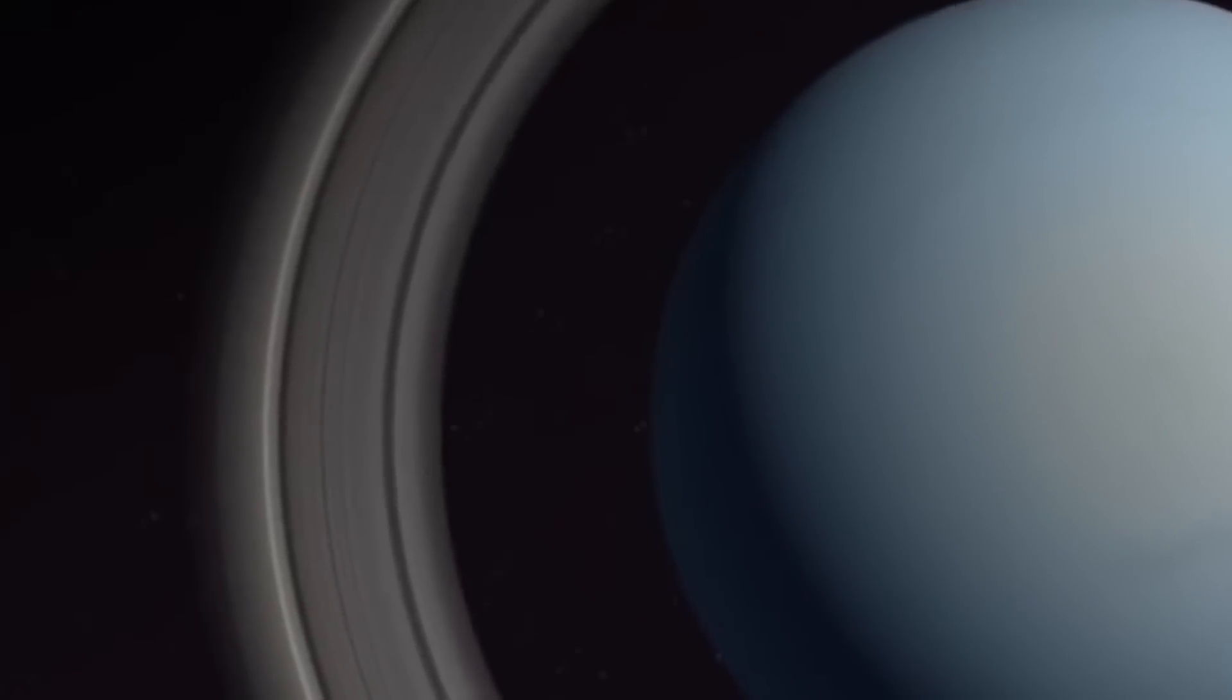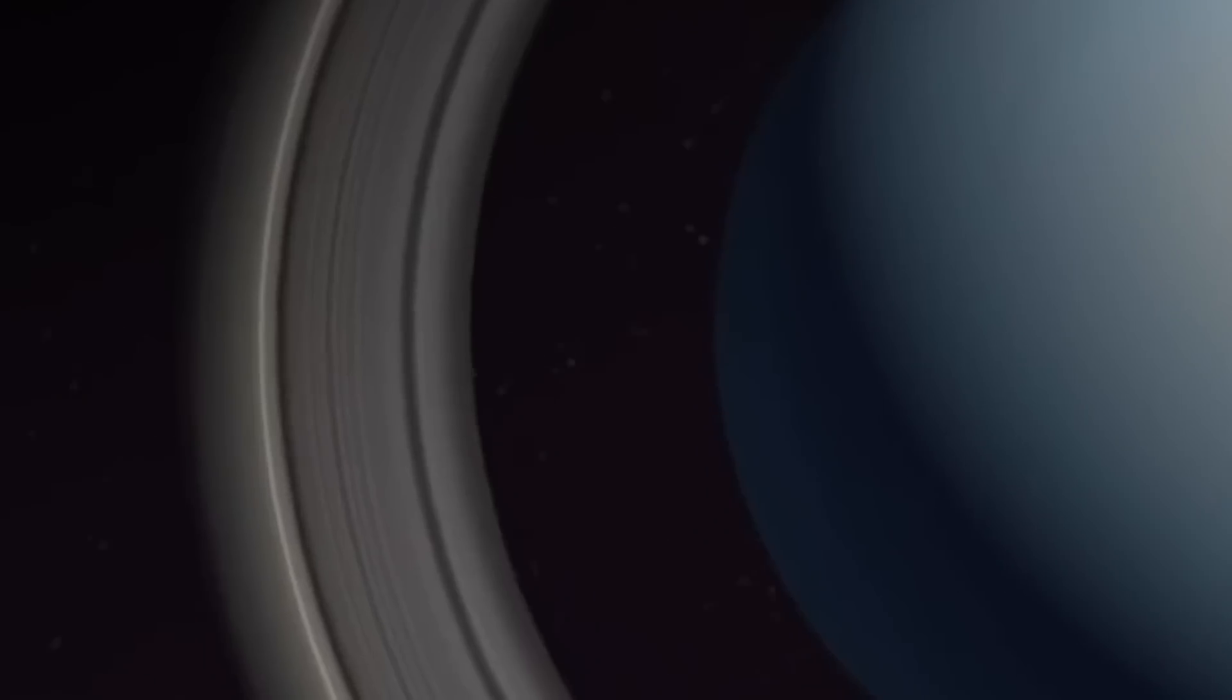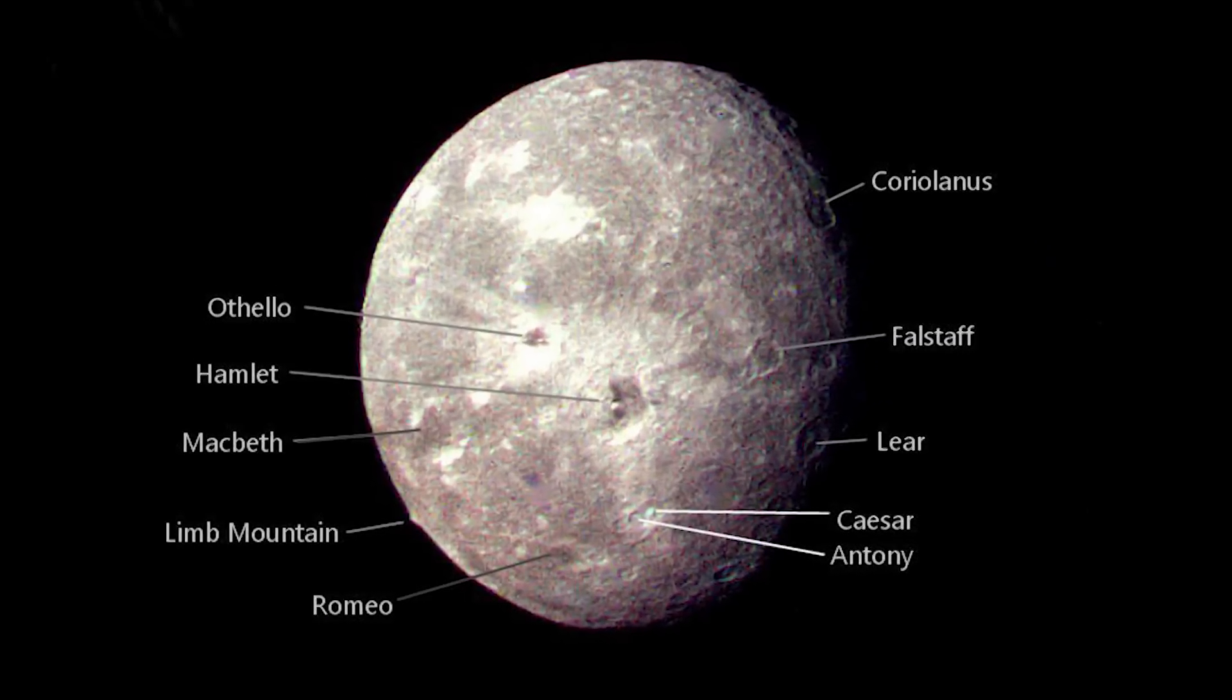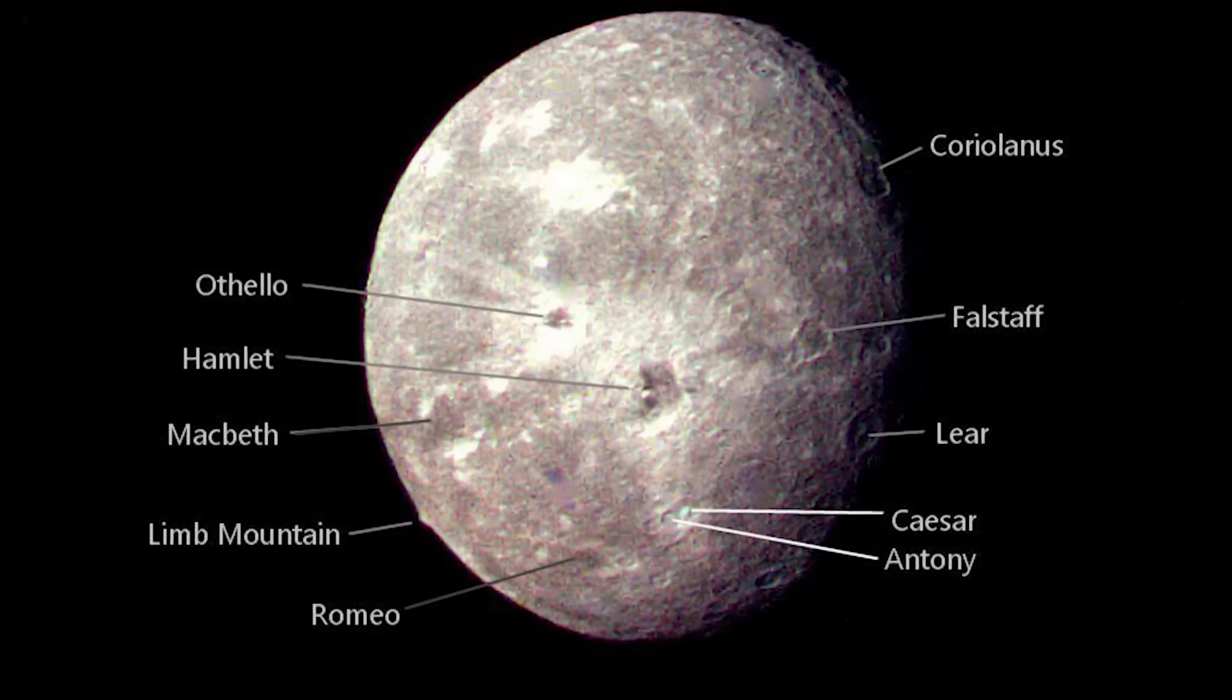Webb also captured many of Uranus' 27 known moons, most of which are too small and faint to be seen here.